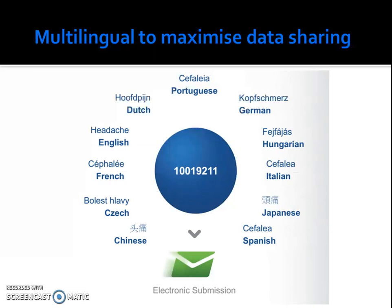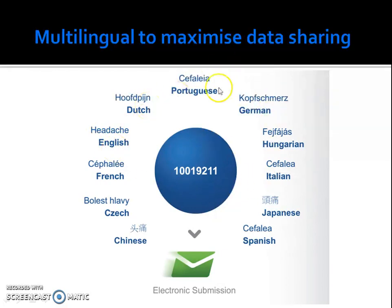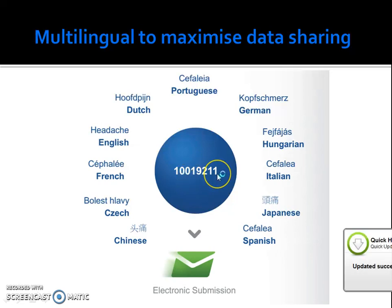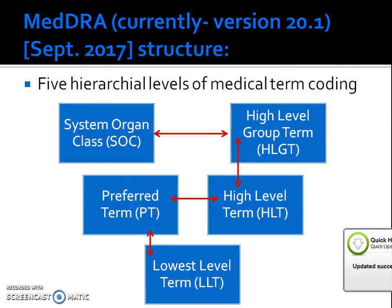MEDDRA is multilingual to maximize data sharing. As you can see, this blue section tells us that every term in the Medical Dictionary has an 8-digit numeric code. For example, this one stands for headache in English. Likewise, for people all across the globe — Dutch, German, Spanish, or Chinese — each has their own version of what the word means, and to have uniformity there is an 8-digit numeric code; for headache it is 10019211.